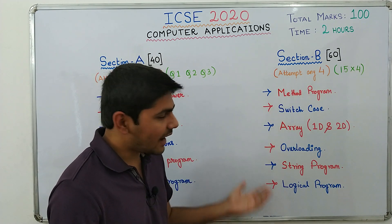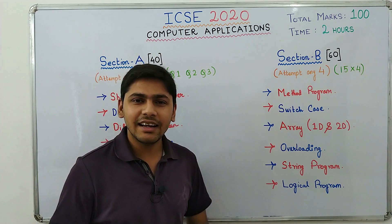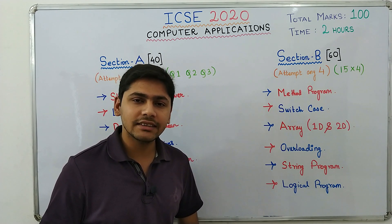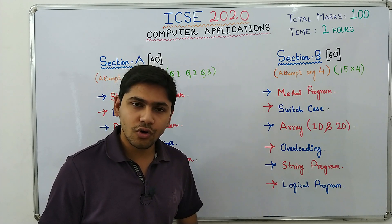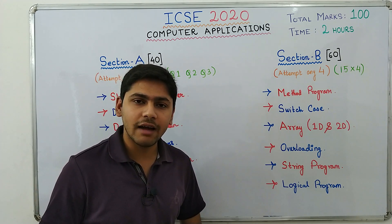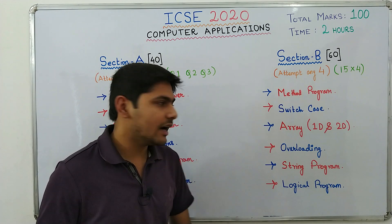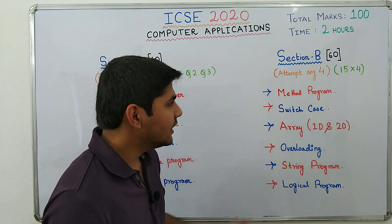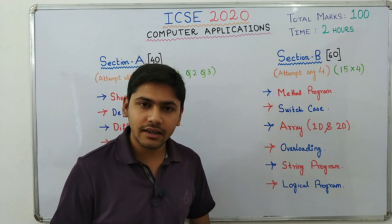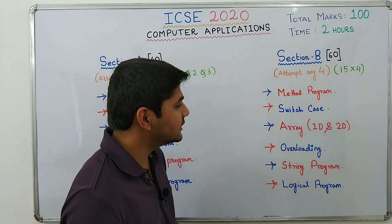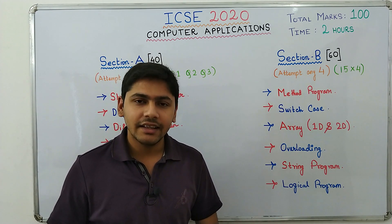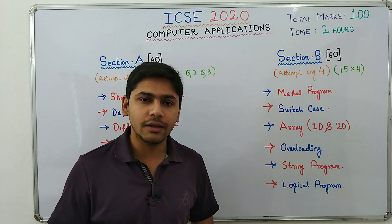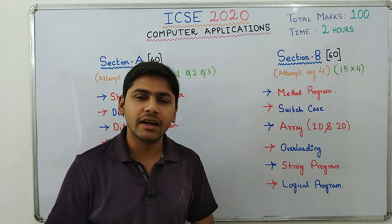Other than that, dry running — now dry running is not compulsory but it makes a good impression. So dry run your programs in your answer script. It simply means to show how the output and the input of your program will look like. A lot of students also ask: can I over attempt? Yes, you can over attempt in Section B. If you feel that one of the programs you have written is slightly incorrect, then you can attempt another program — there is no problem in over attempting.